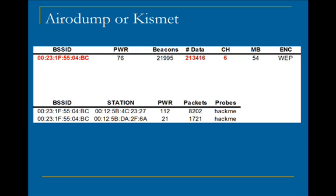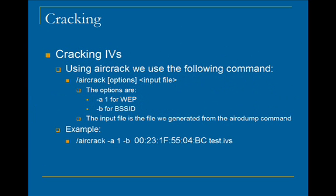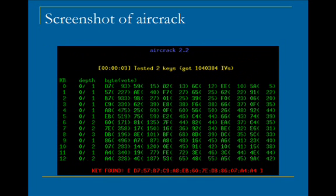Next, we move on to cracking. This is a screenshot of Aircrack. Once the information gathered from AeroDump is fed into Aircrack, the program will return the WEP key that is being used on that network. If you look at the top, the program yielded the key in 3 seconds with over 1 million IVs.